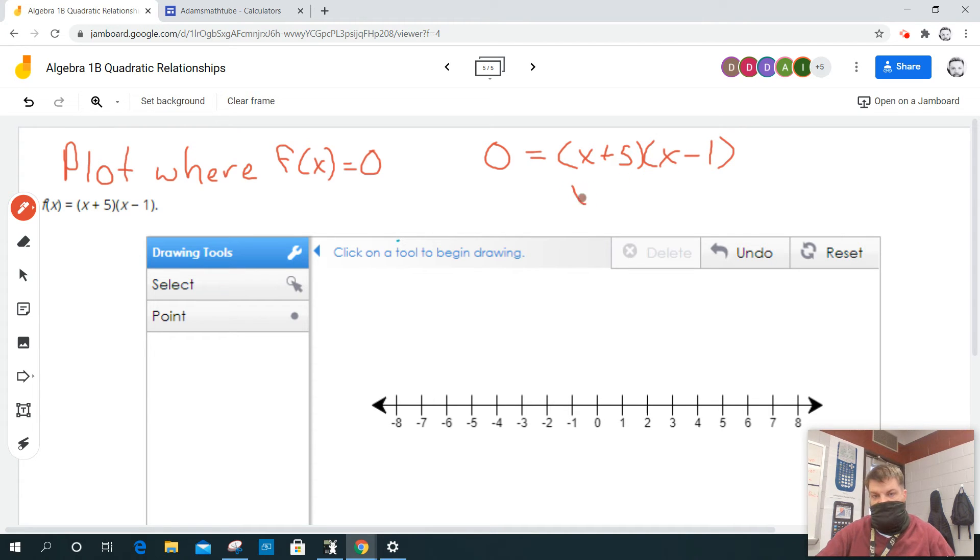So again, we just have to set these equal to zero: x plus five equals zero, x minus one equals zero.